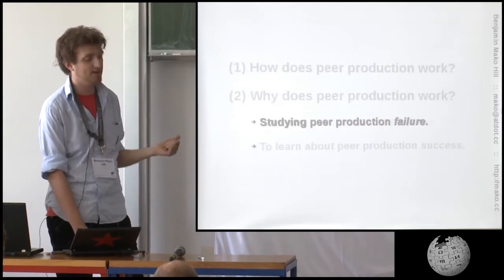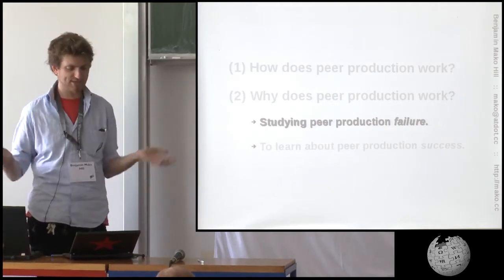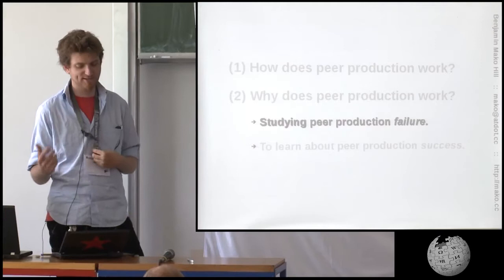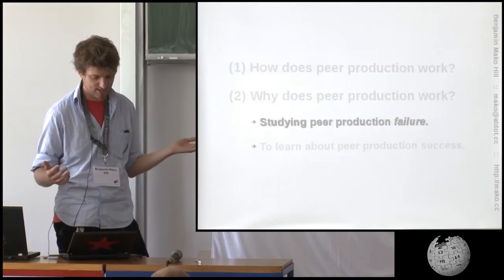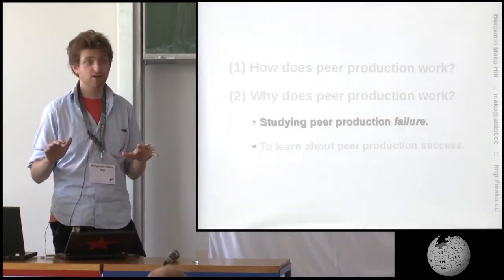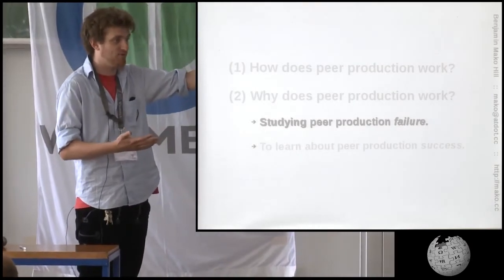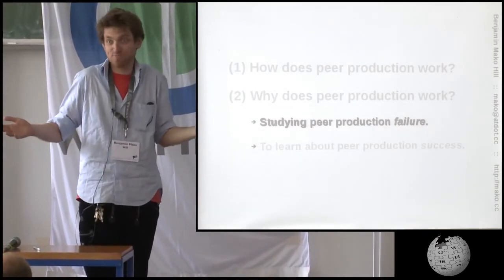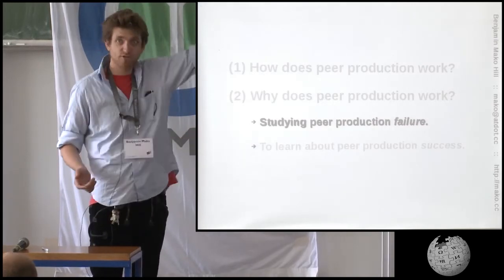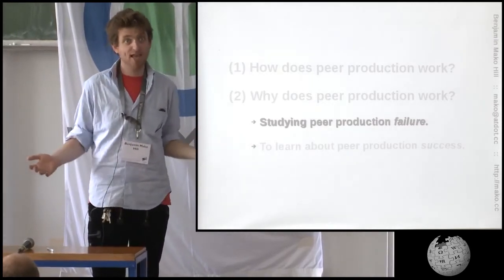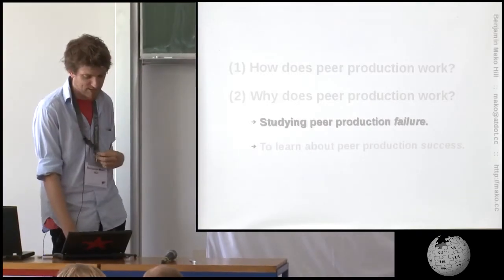What I want to argue is that we need to study failure in peer production. What I'm arguing for is a systematic study of peer production failures in a way that will hopefully build an understanding of peer production success. It's actually important to have good knowledge about how peer production works, or else we can't phrase questions which could possibly answer the second one. We're at the stage where we actually now know a lot about this, and it's time to start thinking seriously about how we can reproduce it.